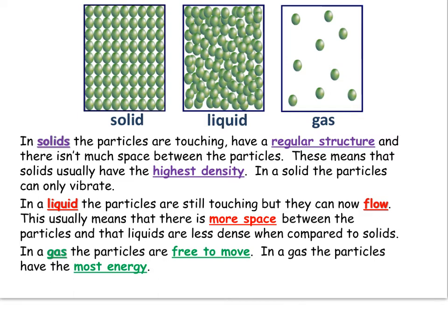Liquids can flow and take on the shape of their container. There is more space between particles in a liquid, so liquids are less dense than their solid form, with a few exceptions. If you continue to heat a liquid, you'll break all the bonds between the particles. Gas particles are then free to move, there's very little force of attraction between them, they fill the whole container, and they have the most energy. Going from solid to liquid to gas, particle energy increases but density usually decreases.